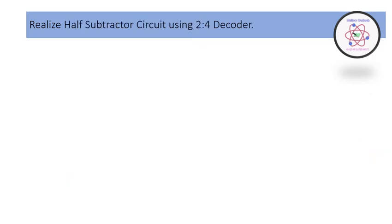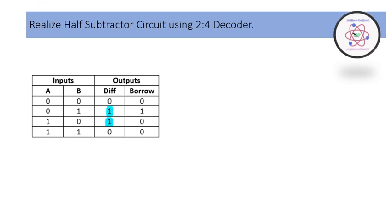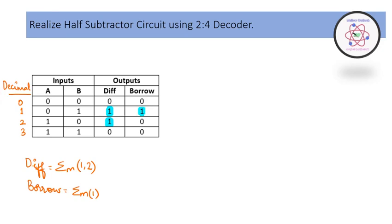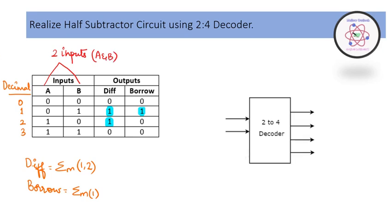For the half subtractor, we use a 2-to-4 decoder with two inputs A and B, and two outputs: difference and borrow. We represent the expressions in terms of min terms corresponding to logic high. The difference equals summation m(1, 2) and the borrow equals summation m(1). I draw the decoder, combine notations 1 and 2 for the difference, and the borrow equals min term 1 directly.